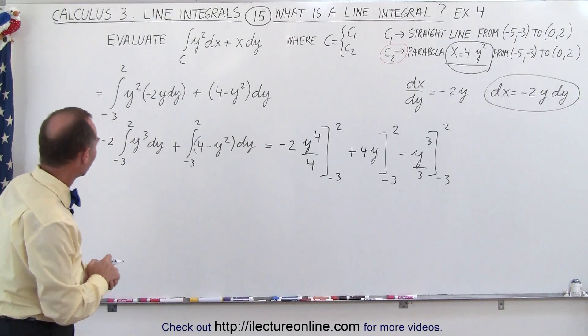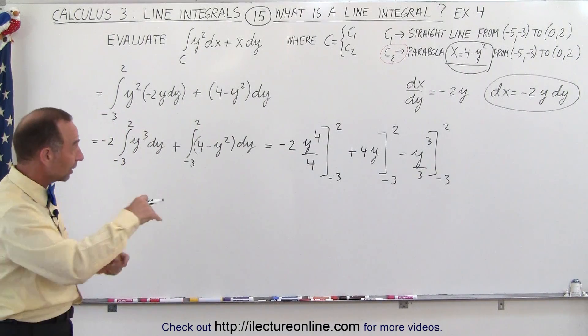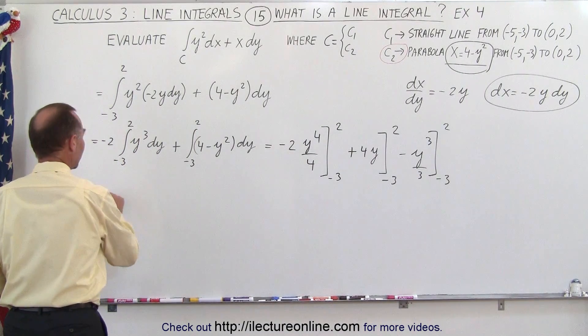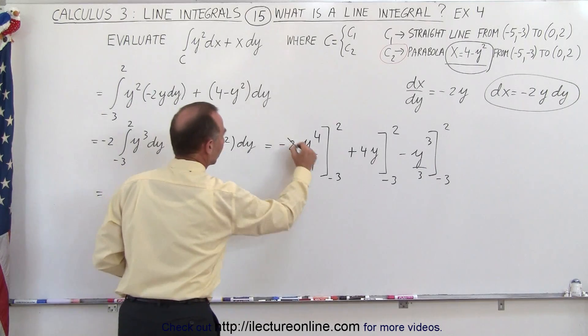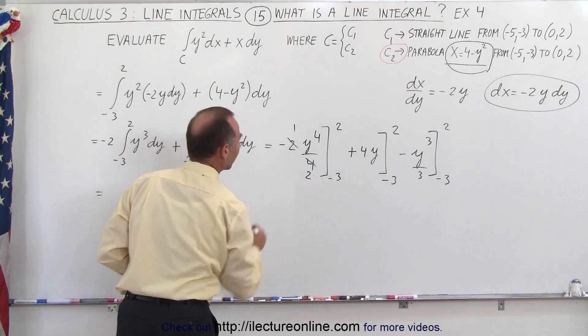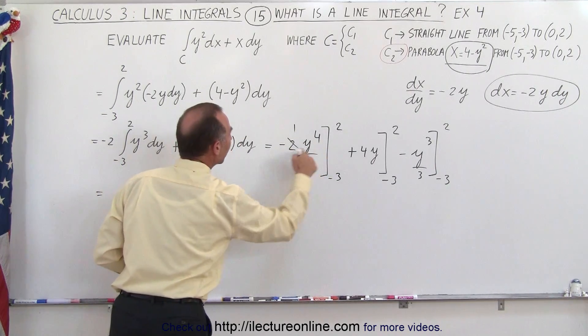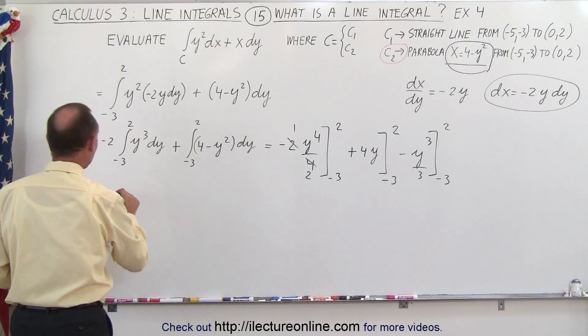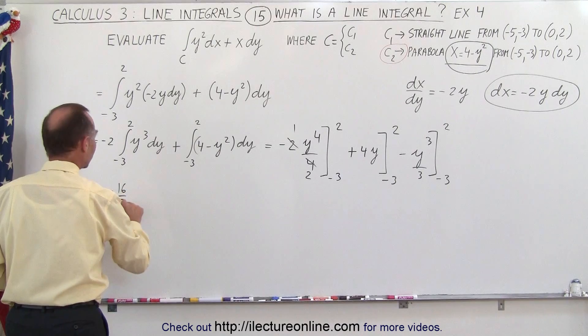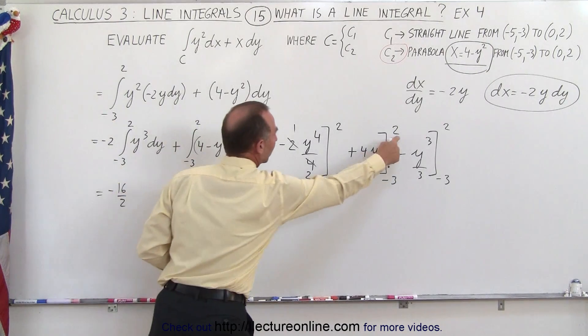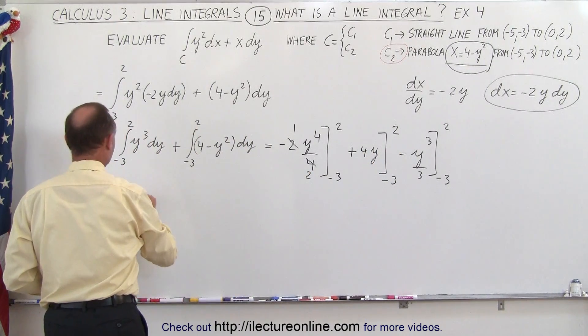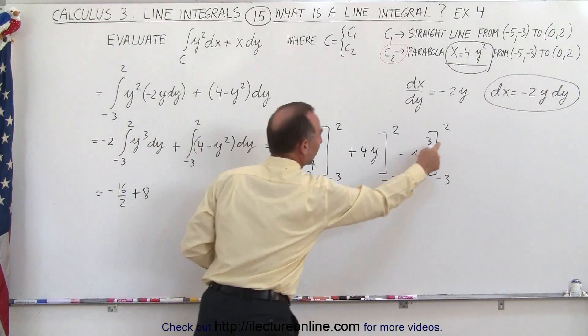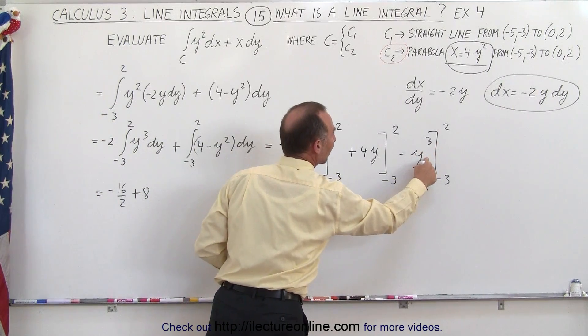All right, now let's plug in the limits and see what we get. The 2 and the 4 simplify. Plugging in the upper limit, we get minus 16 divided by 2, then plus 8, then minus 8 over 3.